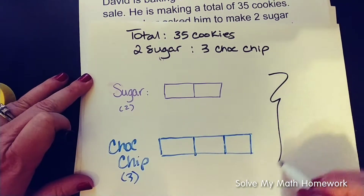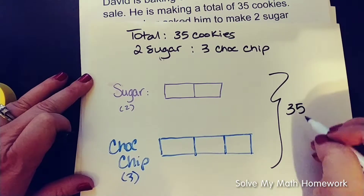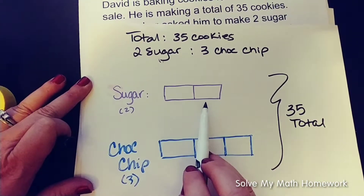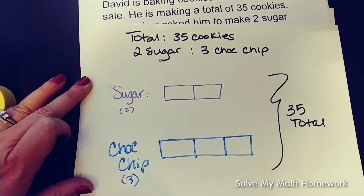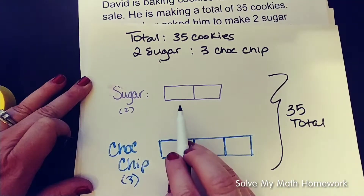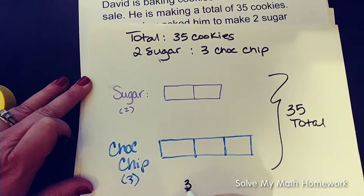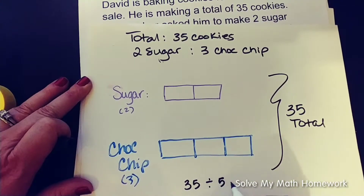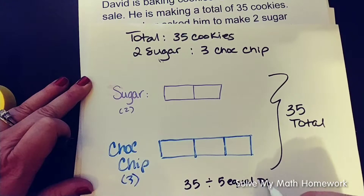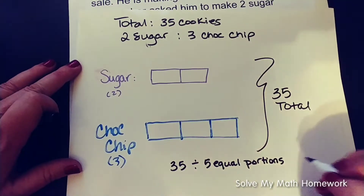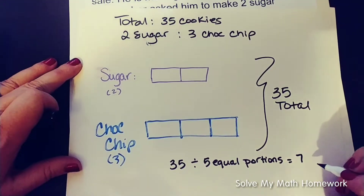We're making 35 total cookies. So we have two portions — two rectangles worth of sugar cookies — for three rectangles worth of chocolate chip cookies. The total rectangles are five portions that are equal-sized, equaling 35. So we have 35 cookies divided by five equal portions or equal rectangles, which equals seven cookies per portion.